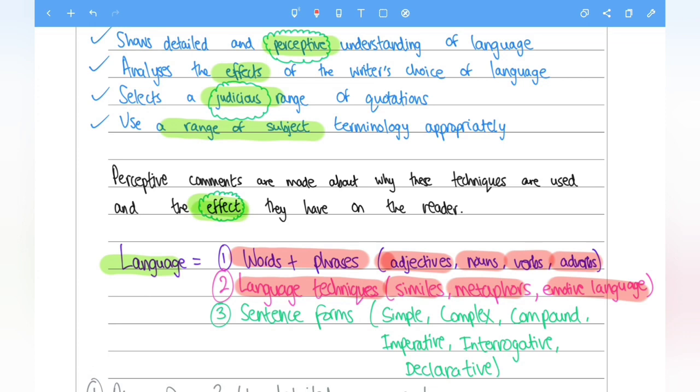And the final one is the use of sentence forms. What type of sentence forms has the writer used? Have they used a short, simple sentence, a complex sentence, a compound, imperative, interrogative or declarative as well? These are some common features that you may find.